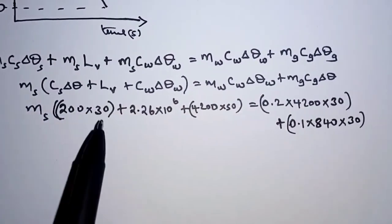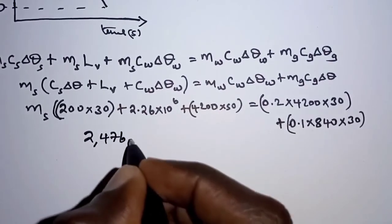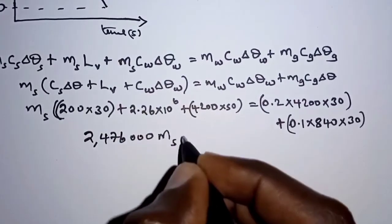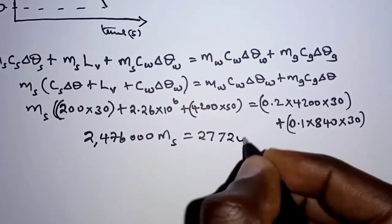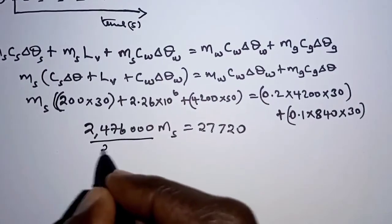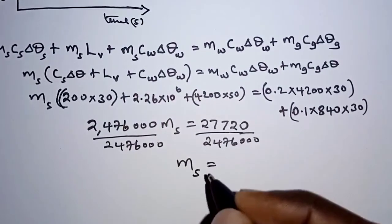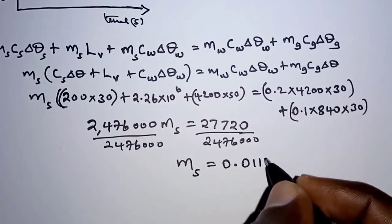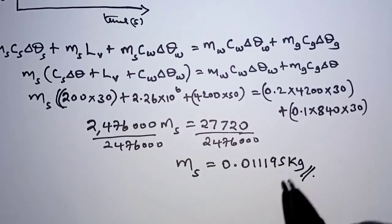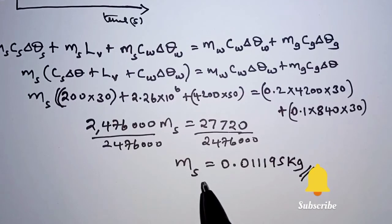Working out the left-hand side gives 2,476,000 × mass of steam. The right-hand side works out to 27,720. Dividing both sides by 2,476,000, the mass of steam is therefore 0.011119 kilograms. That is the mass of steam required. With that we come to the end of the solution to this problem. Thank you for watching.